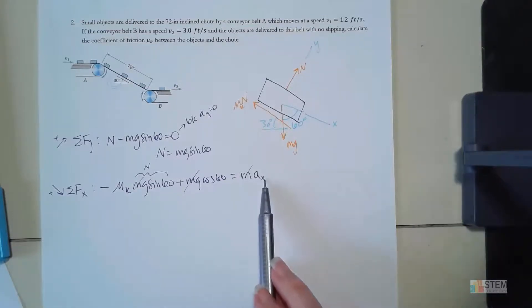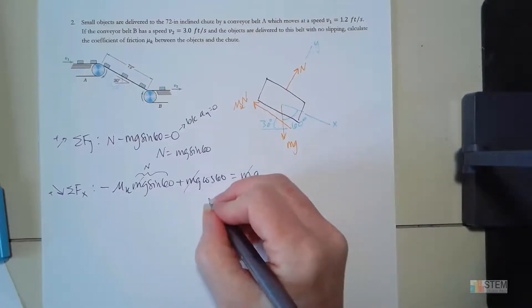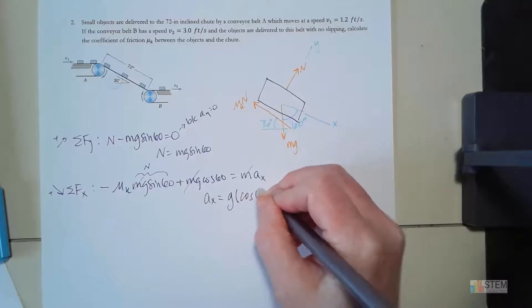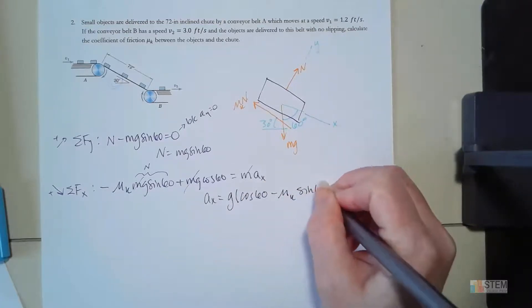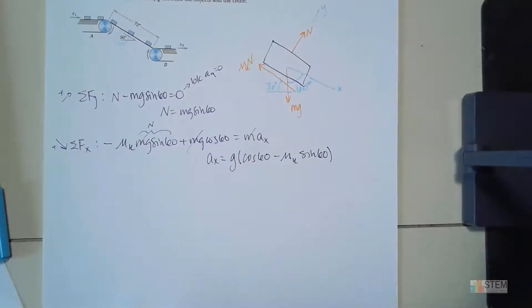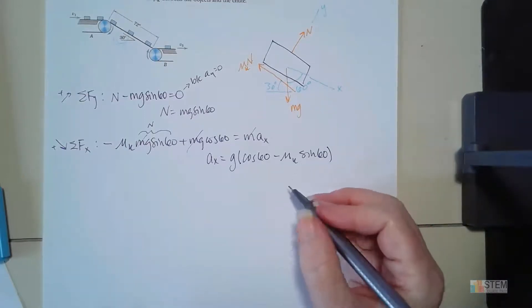And when I was looking at this, then this told me that ax was equal to this expression here on the left. So ax has to be g times cosine 60 minus mu times sine 60. So now we have that acceleration equation. And this is a constant acceleration because mu is not going to change. This is still a constant value which gives us a constant acceleration. So that means we can use our kinematic equations from earlier on in the semester.